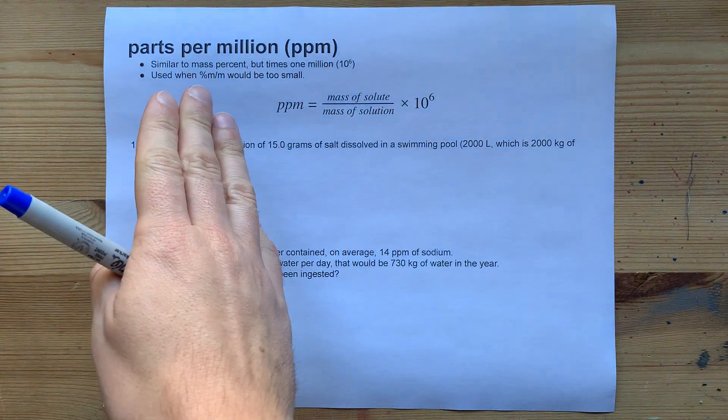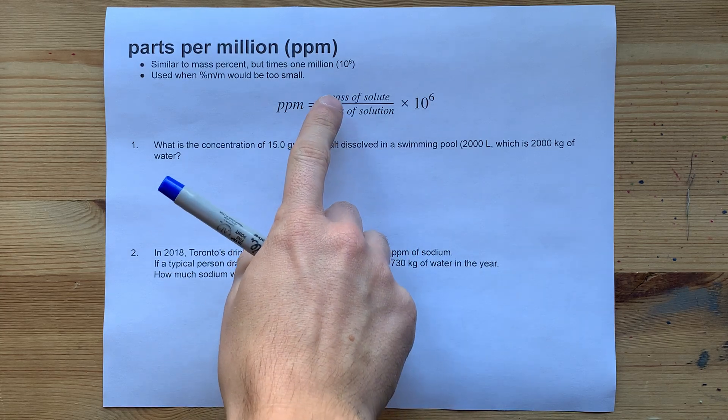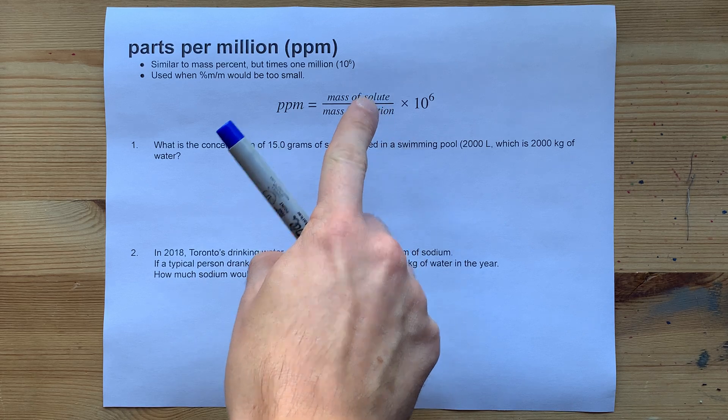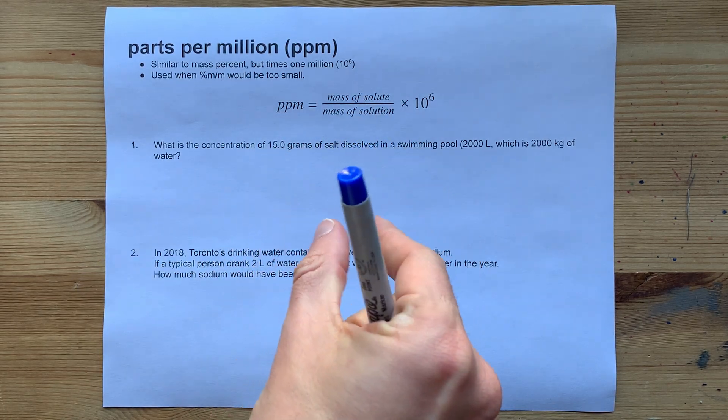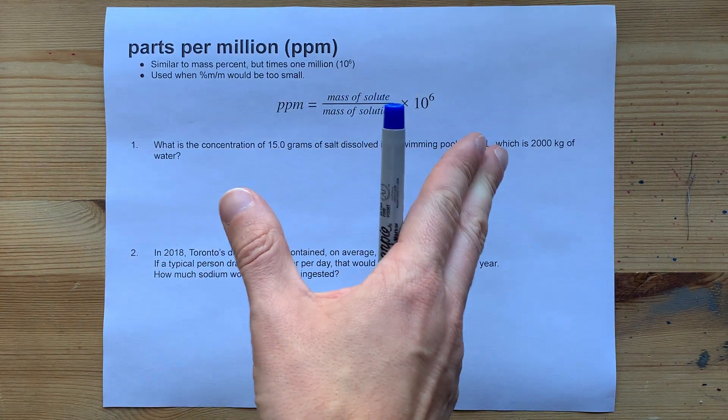Parts per million is similar to mass percent in terms of concentration in that it is the mass of solute out of the total mass of solution. But when a percent by mass, when you times by 100, is going to give you too small of a number, you can multiply by a million instead.